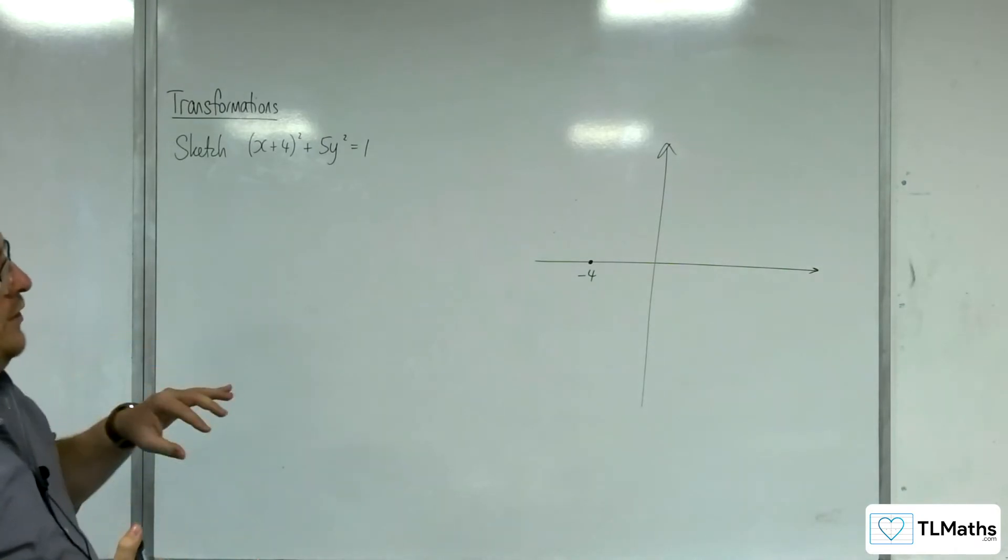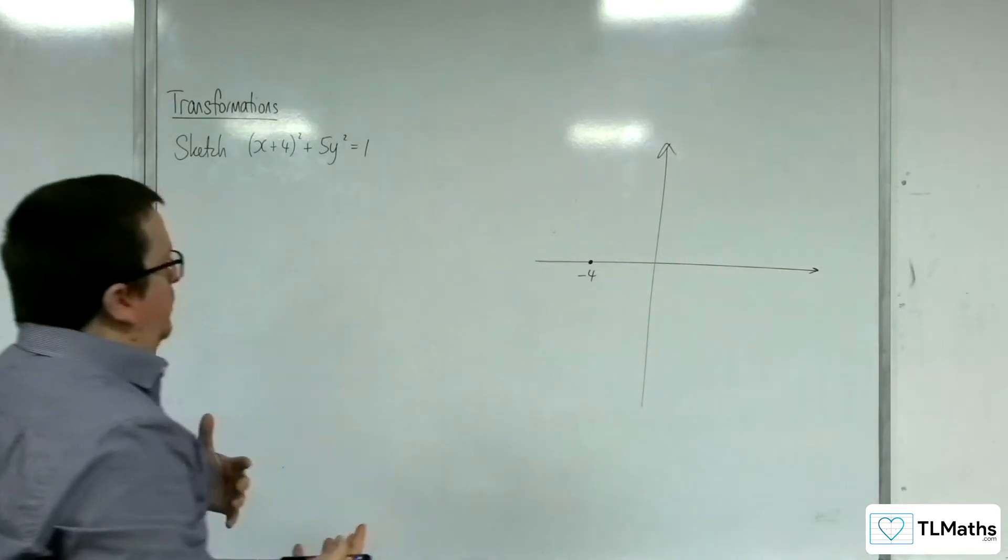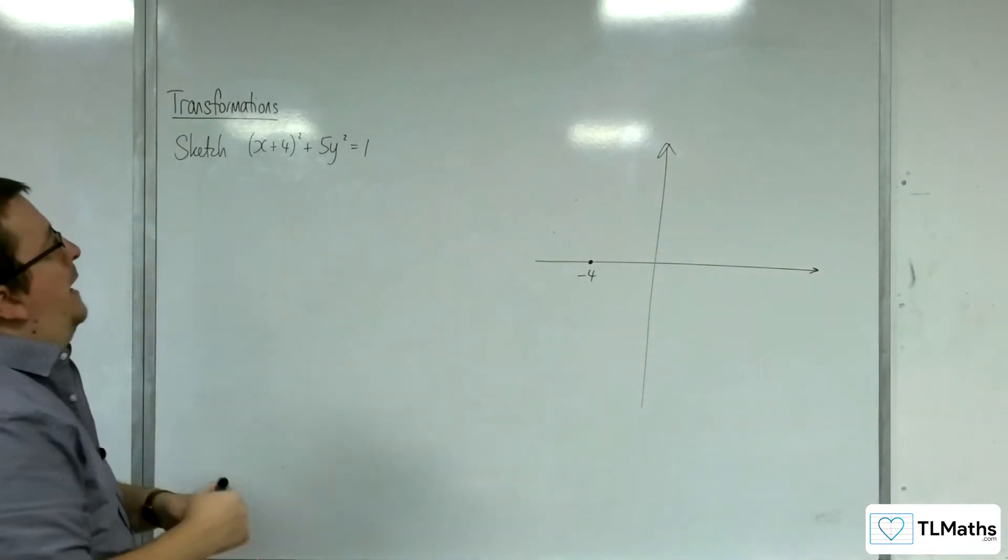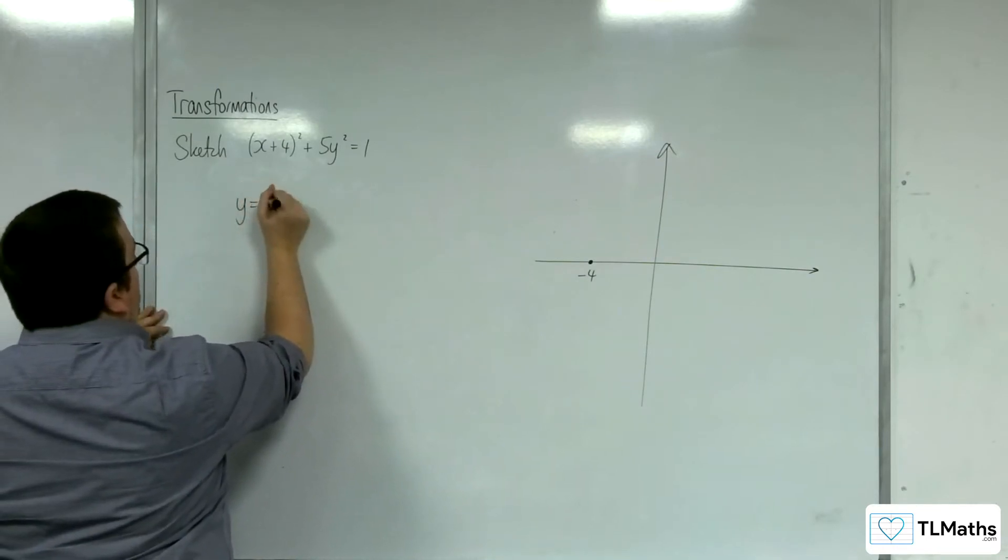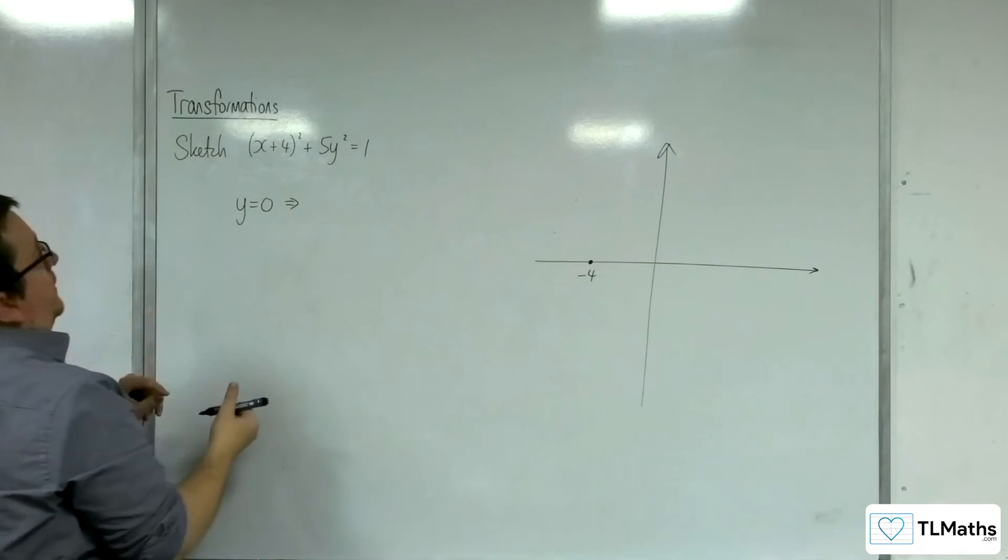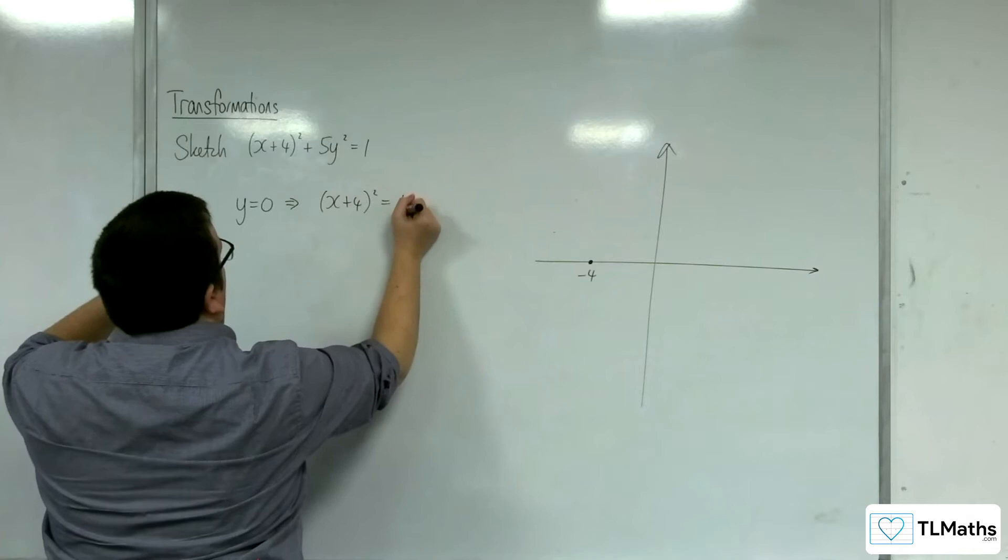Now, what we can do here is we can work out where it's crossing the x-axis by putting y is equal to 0. So, doing it that way, it's really up to you, because as we saw in the previous video, there are several ways of considering this.